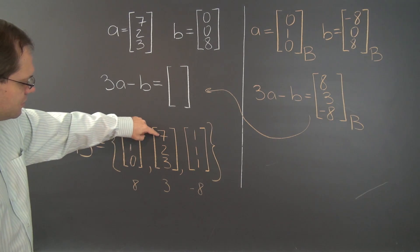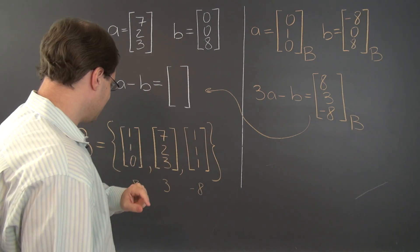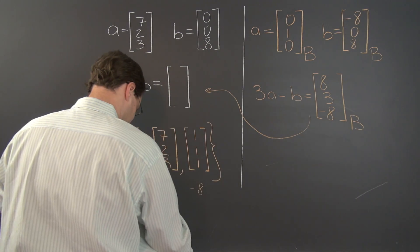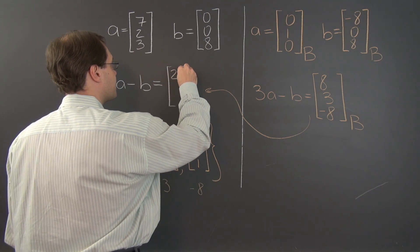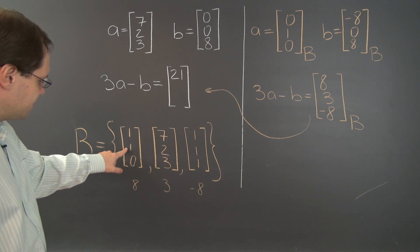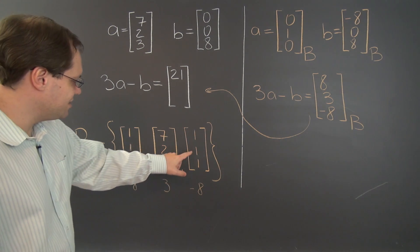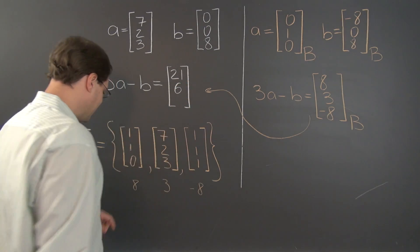And we have 8 plus 21, 29, minus 8, back to 21. So the answer is 21. And 8 plus 6, 14, minus 8, back to 6.